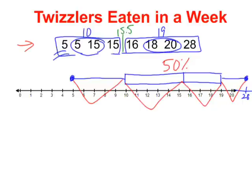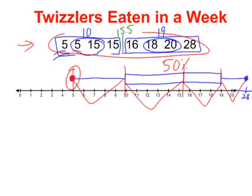One last thing I want to point out: you'll notice this dot here actually represents two students — there were two students that ate five Twizzlers in a week. So remember, just because there's one dot doesn't mean that's just one piece of data; that could represent five, six, or seven students perhaps. So to wrap it up, just remember: a box plot takes all the data and breaks it up into quartiles, into quarters.